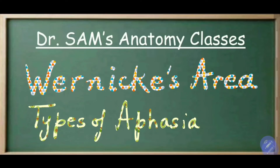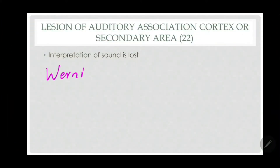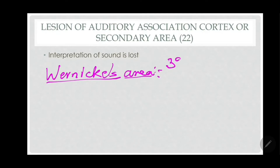In this video, I am going to tell you about Wernicke's area in detail, and it will also include the types of aphasia. Let's discuss Wernicke's area. Because the area number has not been clearly given — some say it's 39, some say it is 40, some say it is 22, and you might even find some saying it as 21.